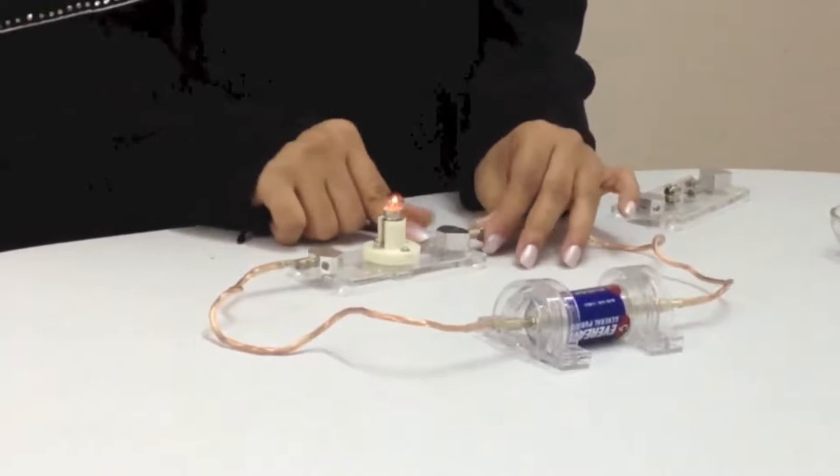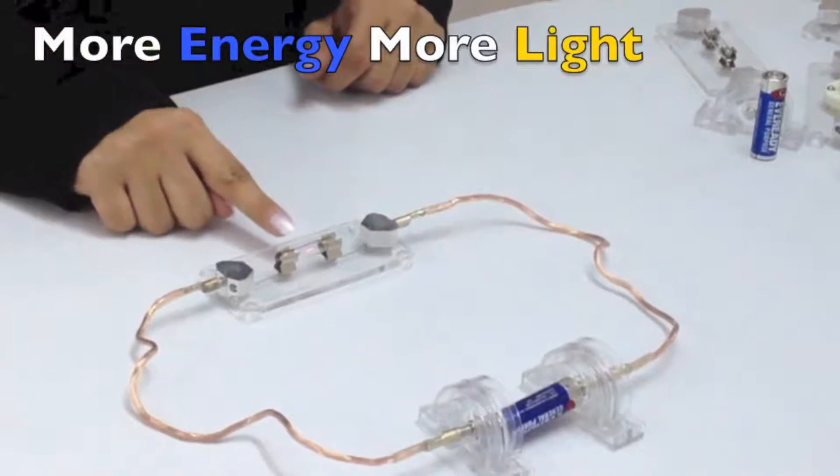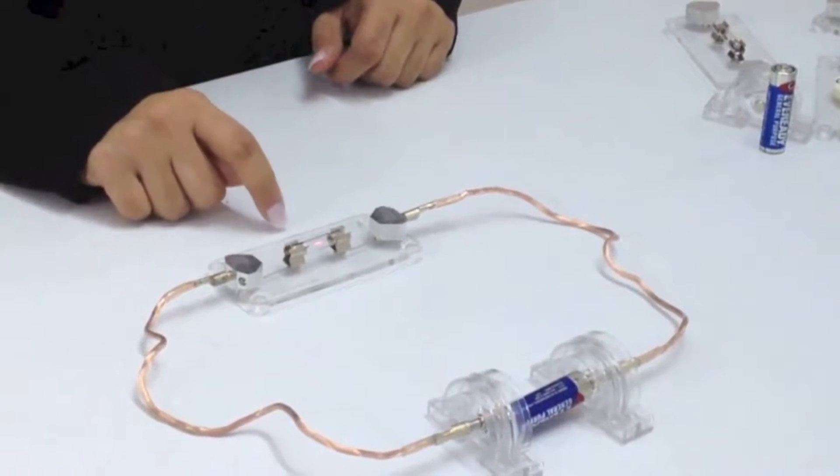If the circuit breaks, the bulb won't work. Here you can see that the bulb is lit, but it doesn't work very bright.